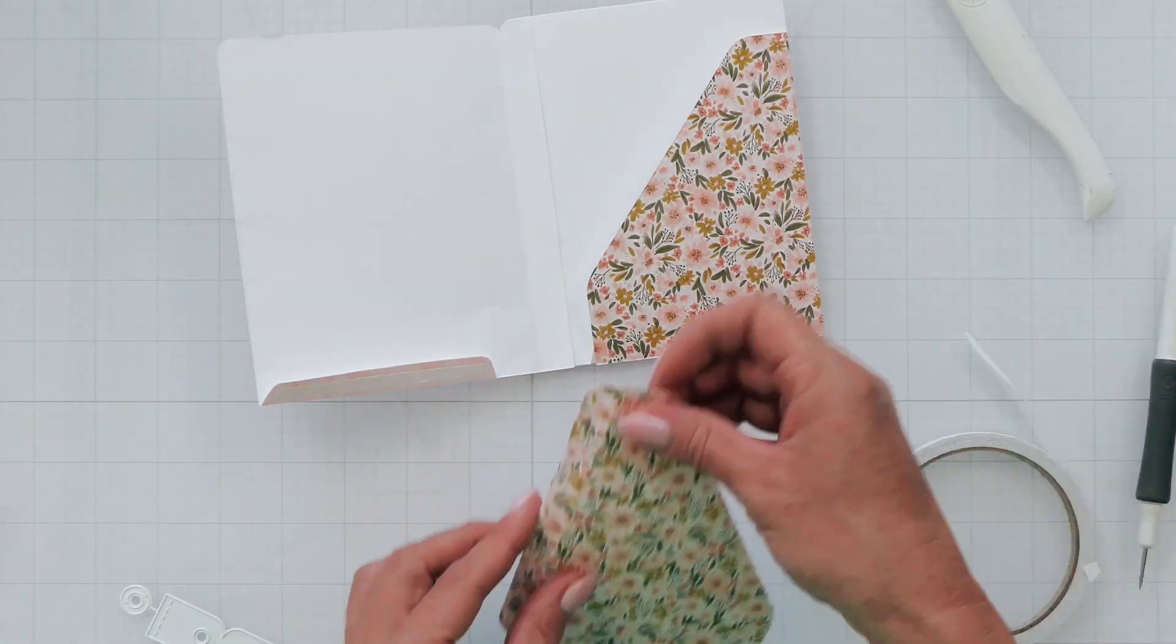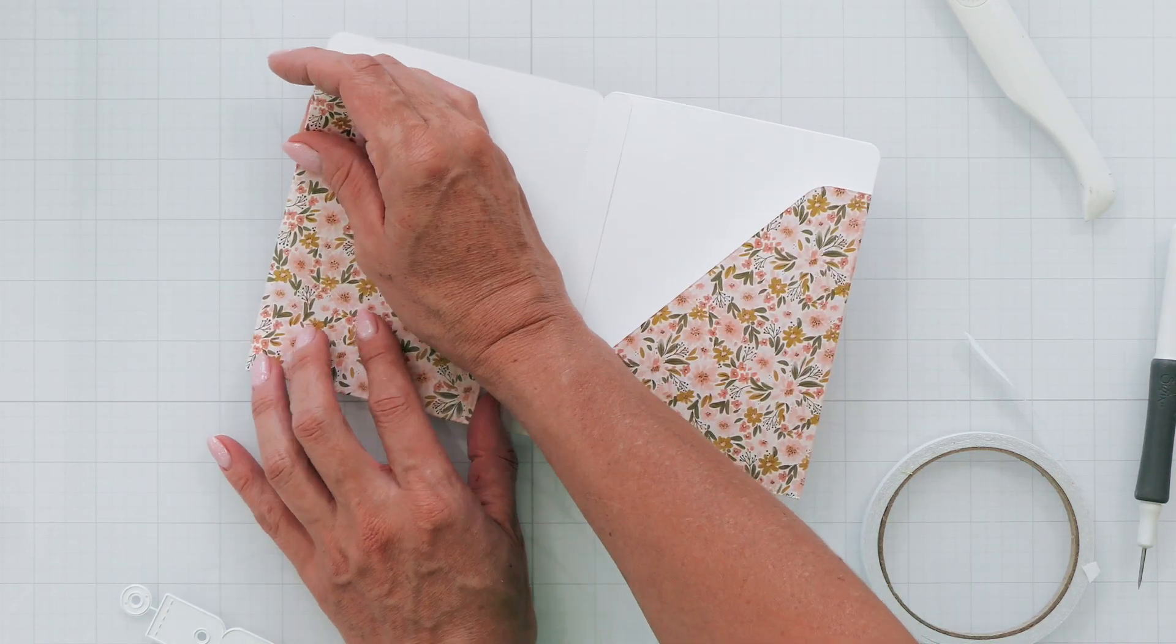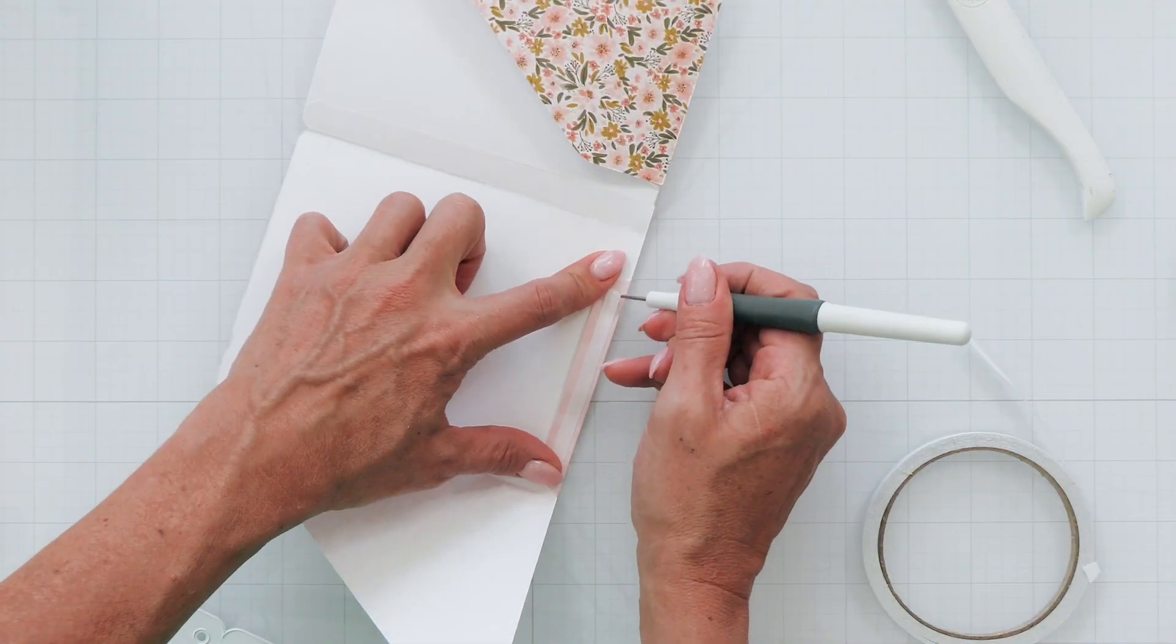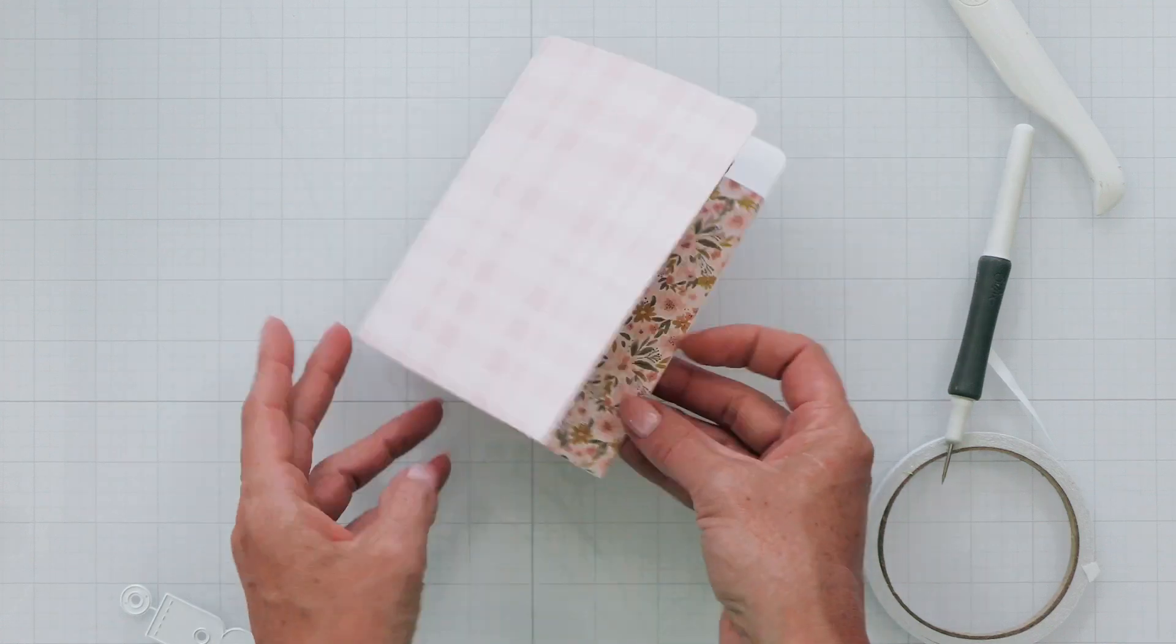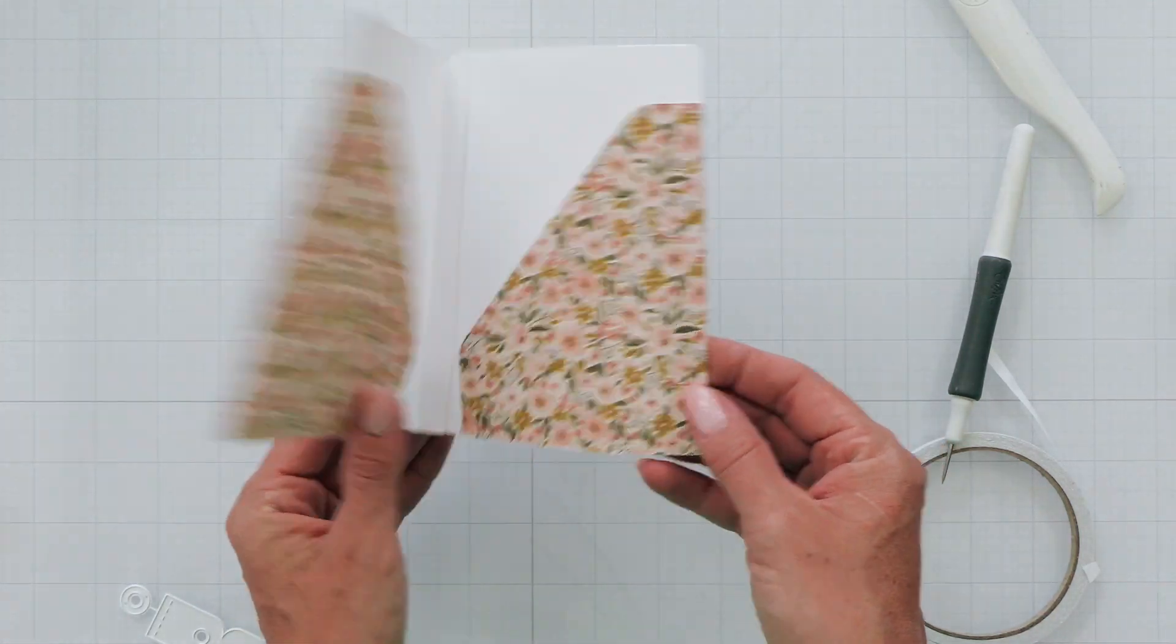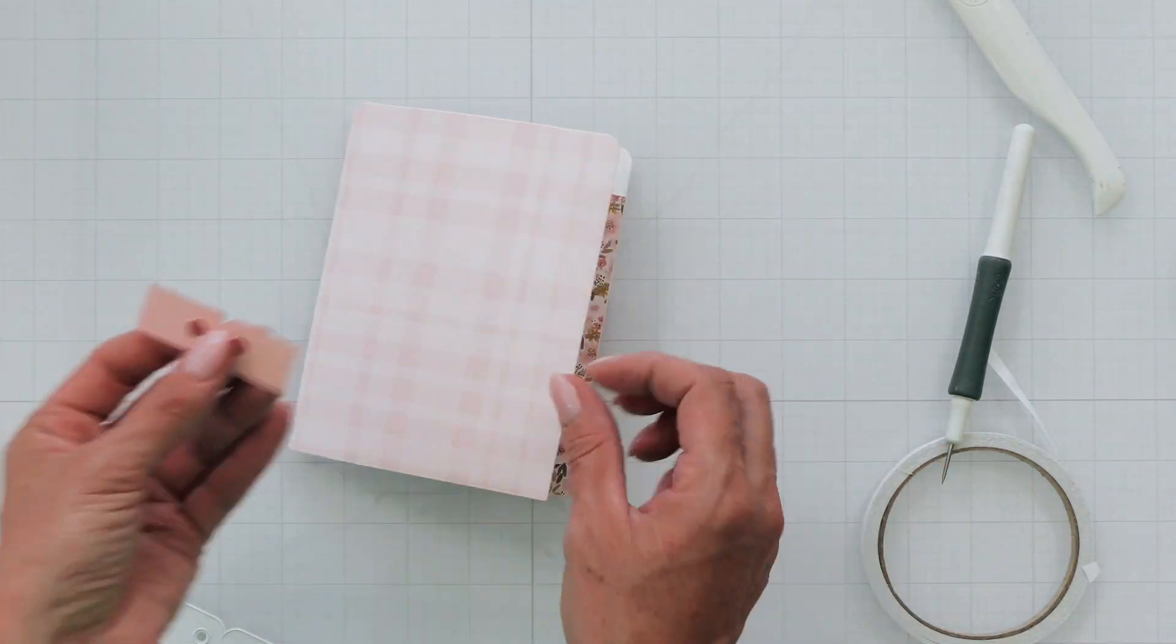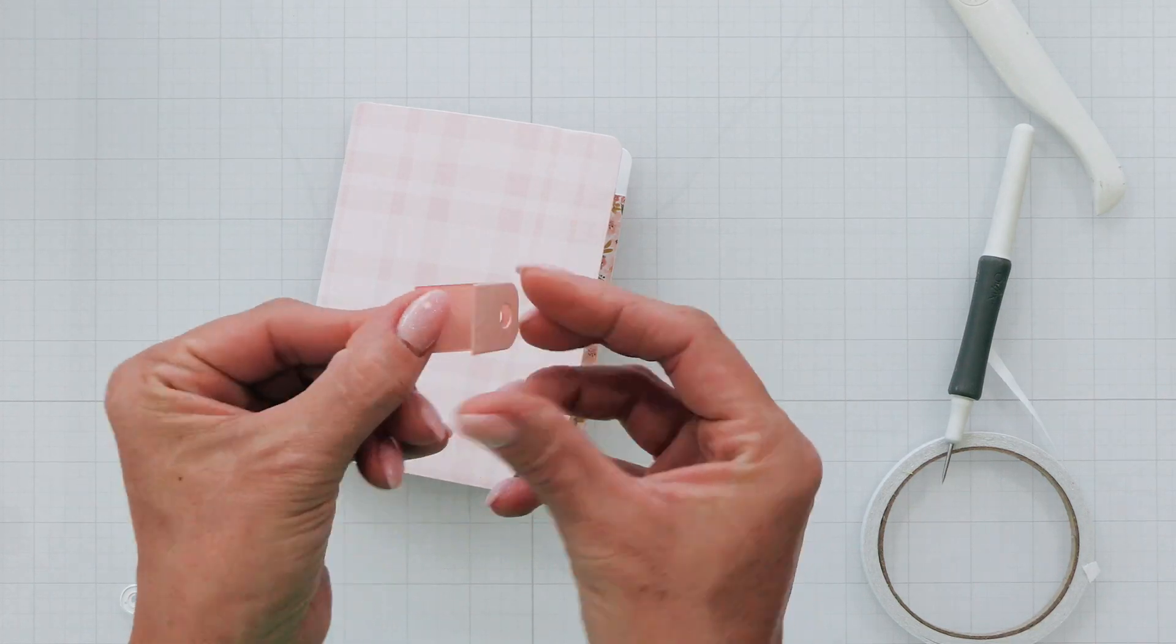Now you're going to repeat the same steps on the left hand side and you will create the perfect little traveler's journal. The finished size when it's folded up is four and a half inches by five and three quarters inches. The perfect size for those little four by five photos.